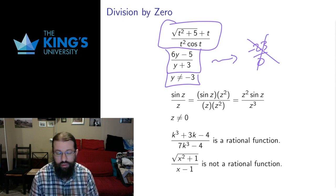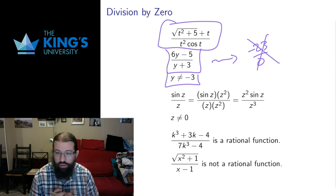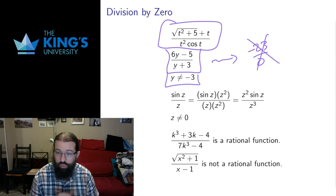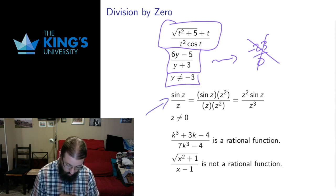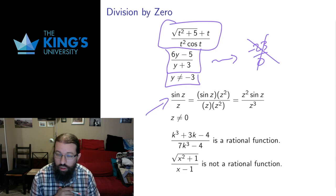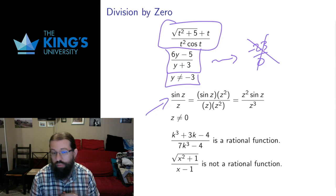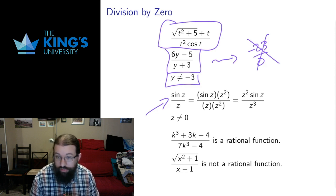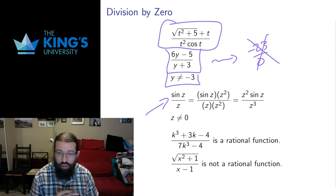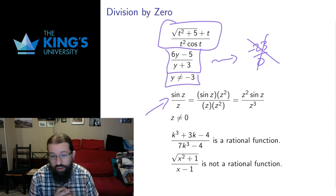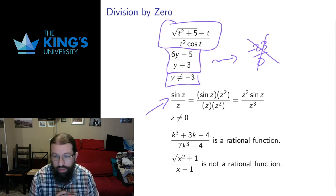In the previous videos on fractions, we talked about reducing fractions by getting rid of common factors, multiplying numerator and denominator by the same thing, and all these operations. Most of these operations still work. Multiplying numerator and denominator of a fraction by the same thing is still fine, and that thing can be an expression involving a variable. This is often really useful for finding a common denominator or expressing a fraction in a particular useful form.